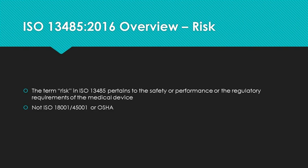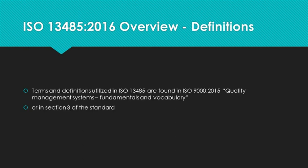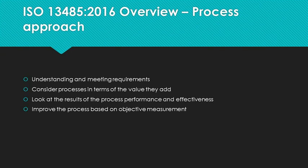The term risk in ISO 13485 pertains to the safety or performance or the regulatory requirements of the medical device. It is not talking about ISO 18001 or ISO 45001 or OSHA, but the risk of the device to the patient or user. Terms and definitions utilized in ISO 13485 are found in ISO 9000-2015, Quality Management Systems Fundamentals and Vocabulary, or in section 3 of the standard. A process approach must be utilized. It must emphasize understanding and meeting requirements, the value the processes add, the results of process performance and effectiveness, and improving processes based on objective measurements.